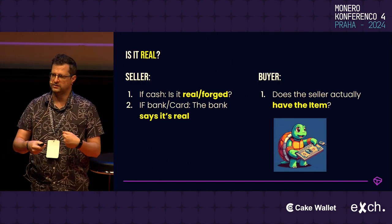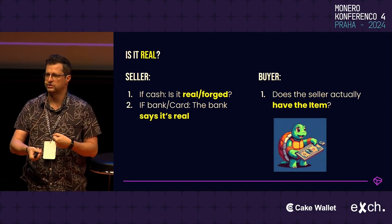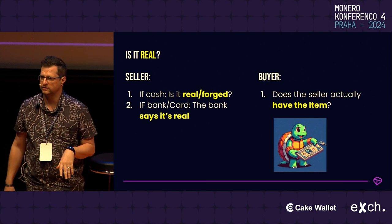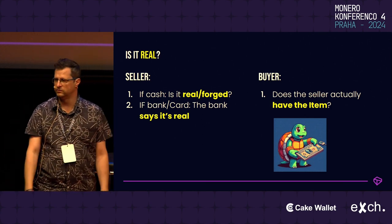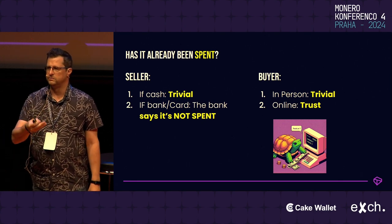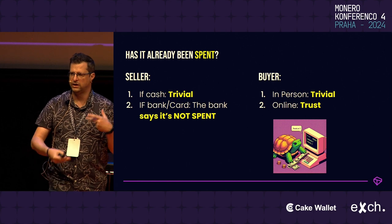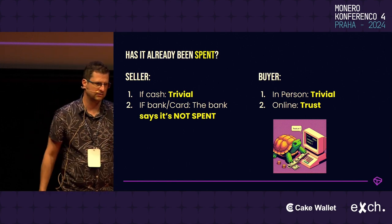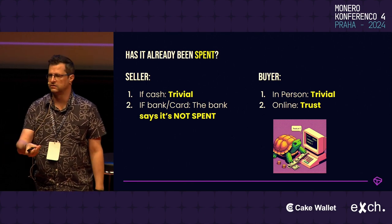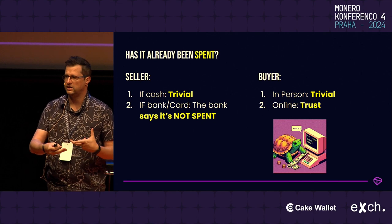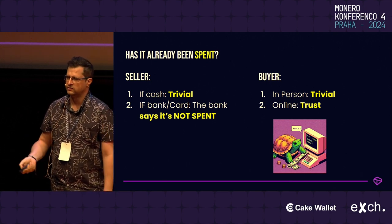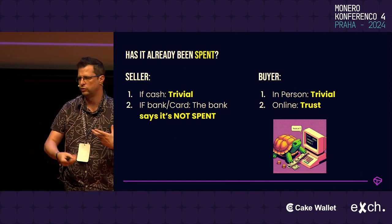So when the seller gets cash in exchange for the item, the first thing he's going to do is check whether the money is real — has it been forged or printed off a printer? If it's a bank, we have to trust the bank to say it was real. From the buyer's side, does he actually have the item? The second thing is: has it already been spent? For cash and banking, we're so used to this that we don't even do this test. If it's cash, we can see the money is there; if it's a bank, the bank tells us it hasn't been spent. If it's in person, you can see the guy has the steering wheel, but if it's online, there's a good chance he's already sold it to someone else. These are the two things we're looking for when designing a protocol for exchanging money.